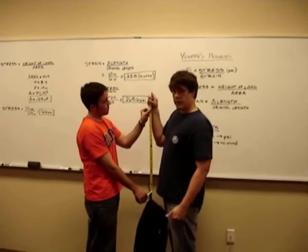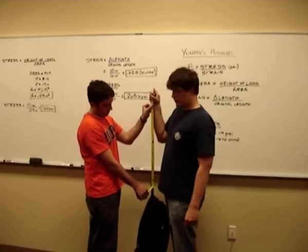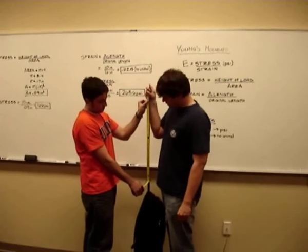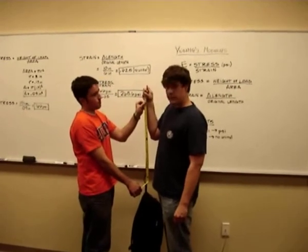As you can see, we're using our bungee cord hooked to our backpack, which is 15 pounds. The original length of the bungee cord was 16 inches and now it is 24 inches.